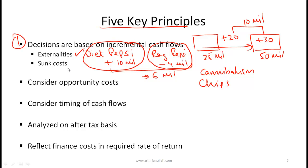Sunk costs are costs that have already been incurred, and when you do capital budgeting analysis, sunk costs should not be considered — this is water under the bridge. For example, if Pepsi spent 2 million on analysis of whether or not to launch regular Pepsi, that 2 million has already been spent and should not be used to determine whether to go ahead with the project. Project decisions are based on incremental cash flows and cash flows that are to come in the future.